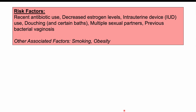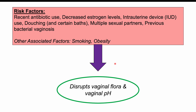Risk factors important with regards to alterations in vaginal flora include recent antibiotic use, decreased estrogen levels, having an intrauterine device (IUD), douching and taking certain baths, having multiple sexual partners, and having a history of previous bacterial vaginosis. Smoking and obesity are also associated factors. Antibiotics can kill off some vaginal flora; decreased estrogen causes environmental changes; IUDs can cause disruption; douching and certain baths change vaginal pH; and smoking and obesity can compromise the immune system, disrupting the balance that keeps certain bacterial species in check.